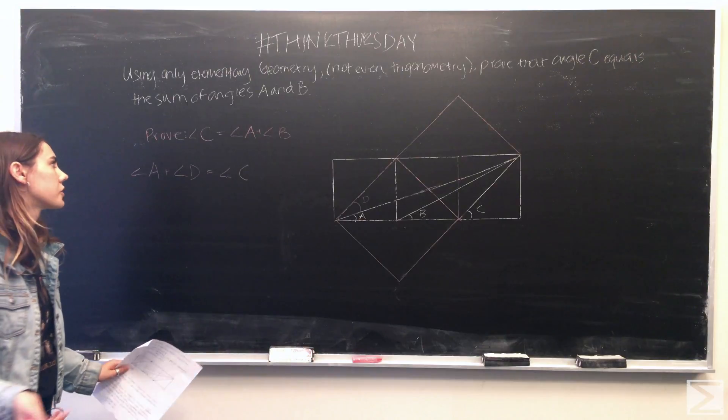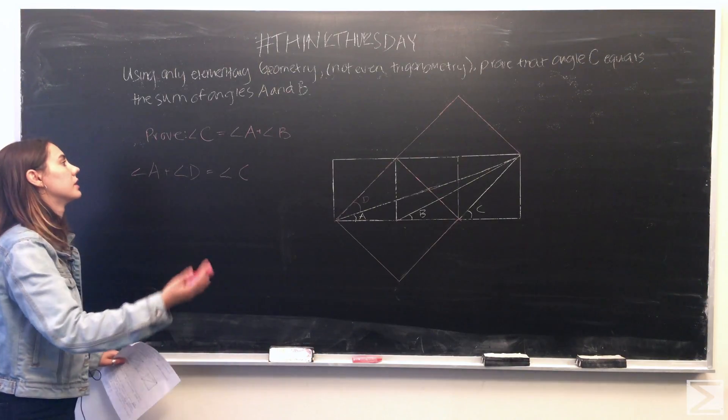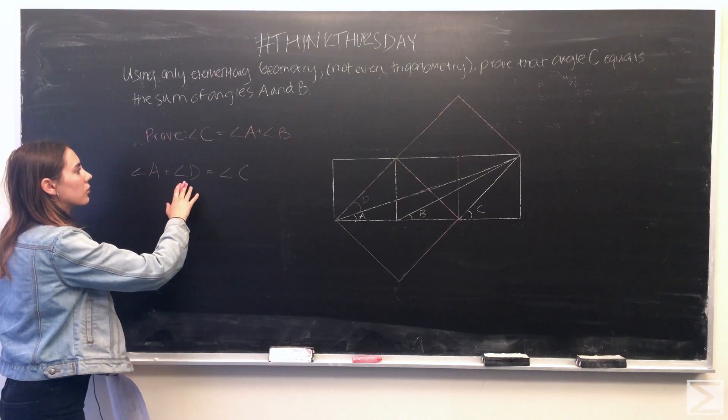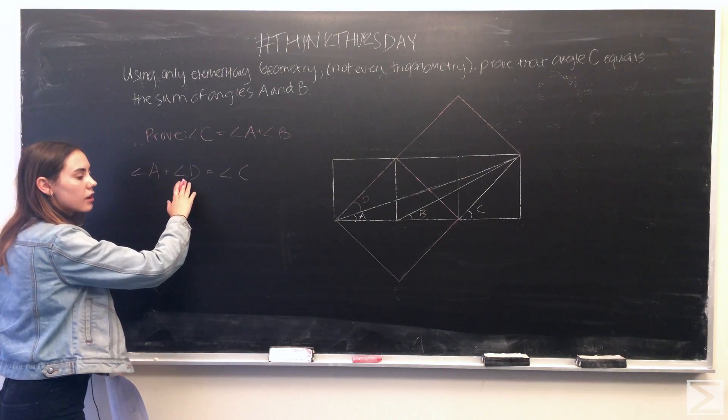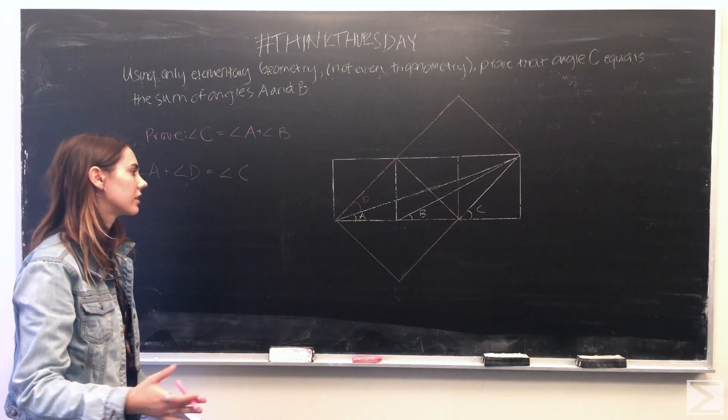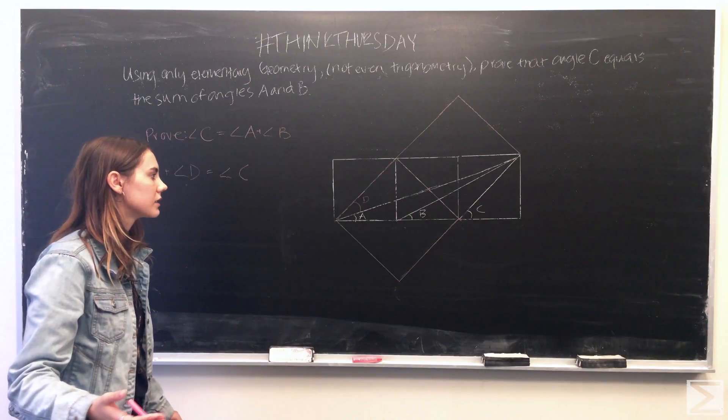And now we're already a step closer to proving that angle A plus B is equal to C. So what we want to do is try and find a way to show that angle B and angle D are actually equal. And using the two squares that we've constructed, we can actually do that pretty easily.